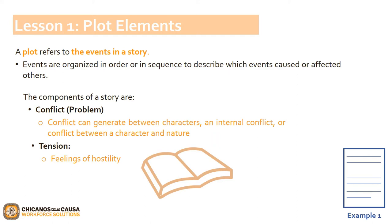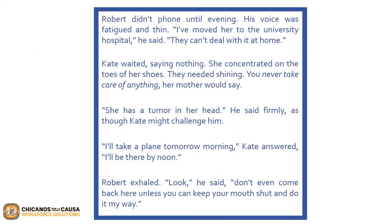Now that we've covered plot elements, let's look at our first written example found on page 100. We'll be reading an excerpt about a brother and sister whose mother has a tumor. As we read, try to see if you can figure out the order of events and the conflict.